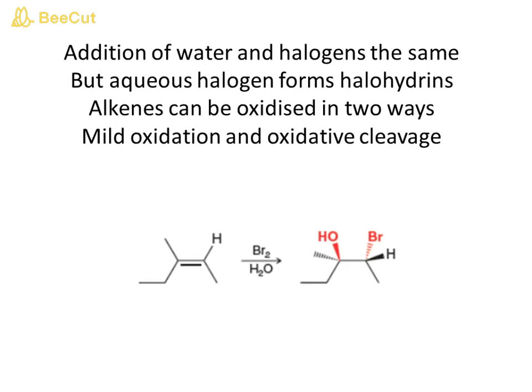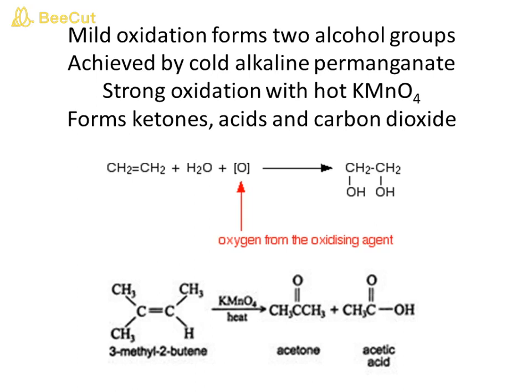Alkenes can be oxidized in two ways: mild oxidation and oxidative cleavage. Mild oxidation forms two alcohol groups, achieved using cold dilute potassium permanganate (KMnO4). Strong oxidation with hot KMnO4 forms ketones, acids, and carbon dioxide.